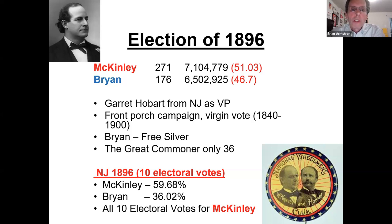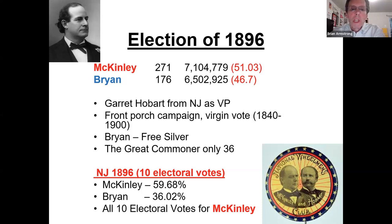Bryan was one of the youngest men ever to run for president — he ran three times, this being the first. Garrett Hobart from New Jersey was the VP for McKinley and would have ended up being president if he hadn't passed away right before the next election, leading to Theodore Roosevelt being selected as VP instead. The 'front porch campaign' started here with McKinley, who never really went anywhere — he stayed at his house in Ohio and people came to visit. An important concept was the 'virgin vote' — getting first-time voters for a party, figuring they'd be locked in for life.